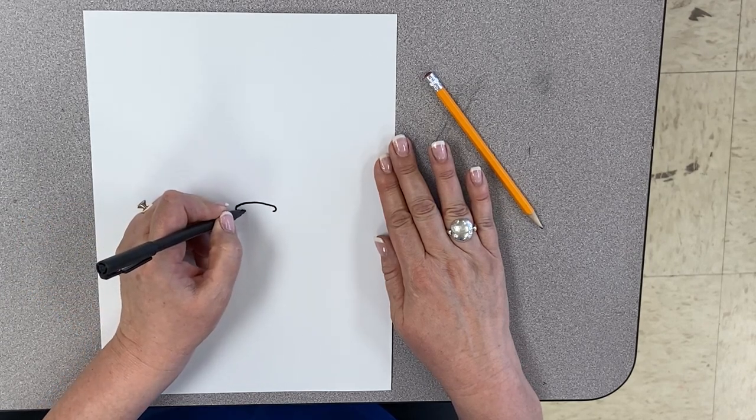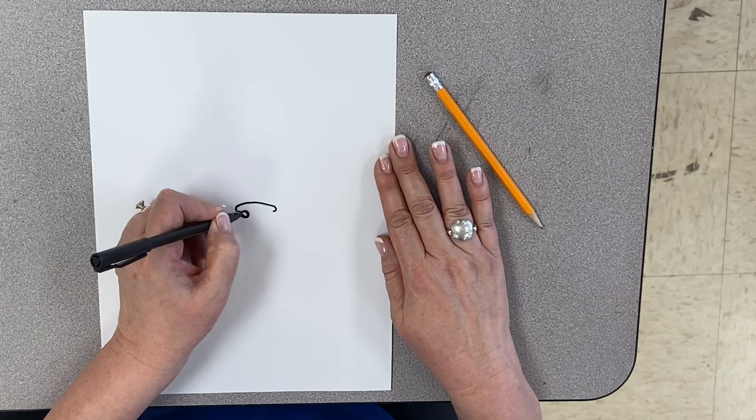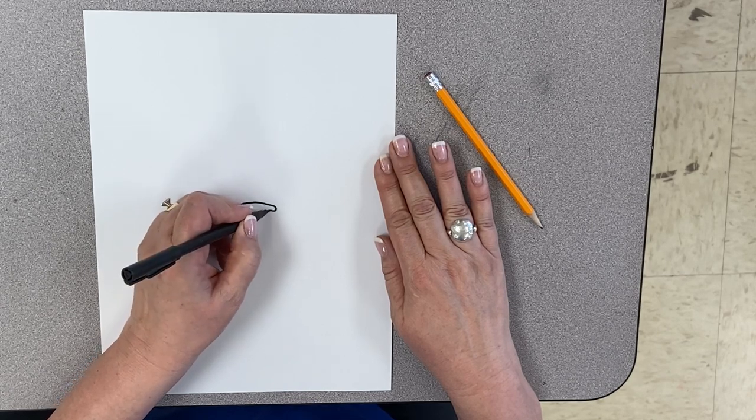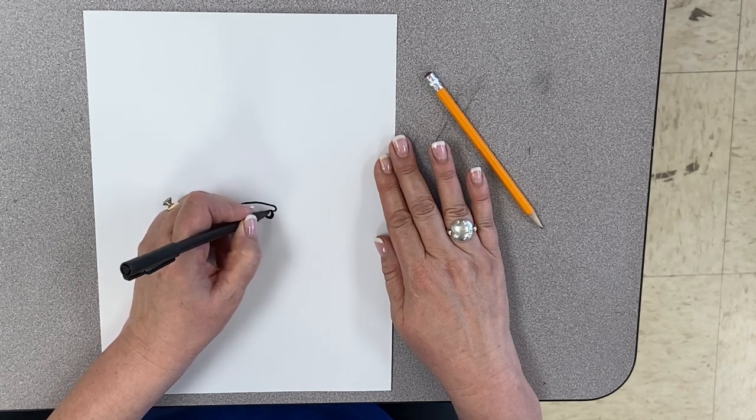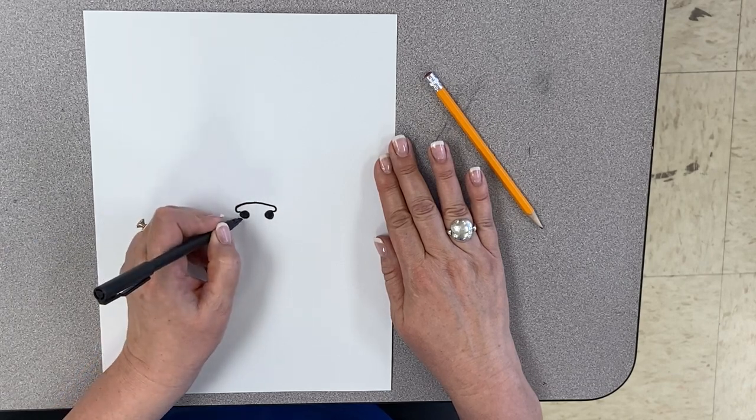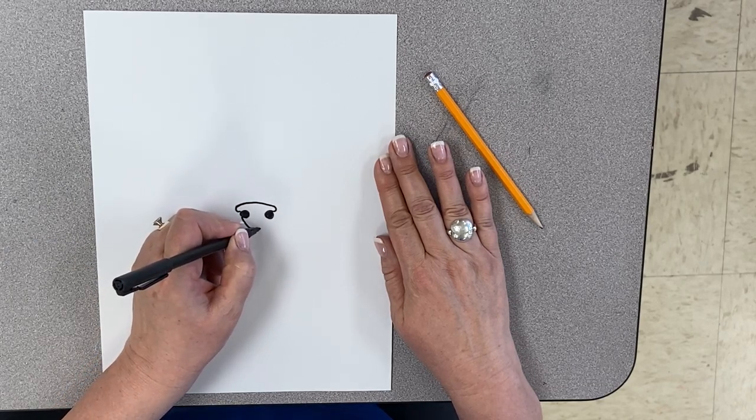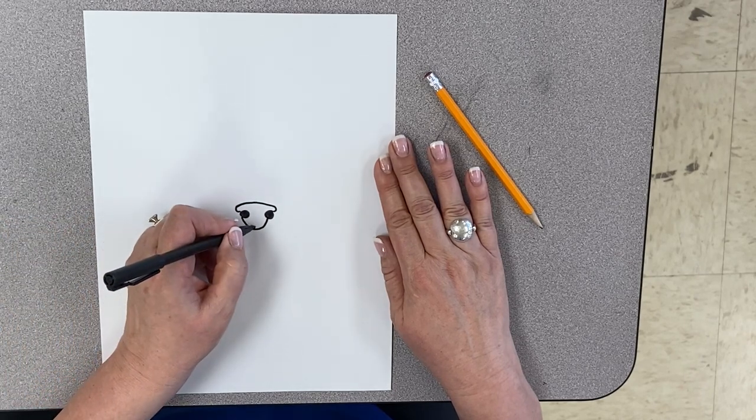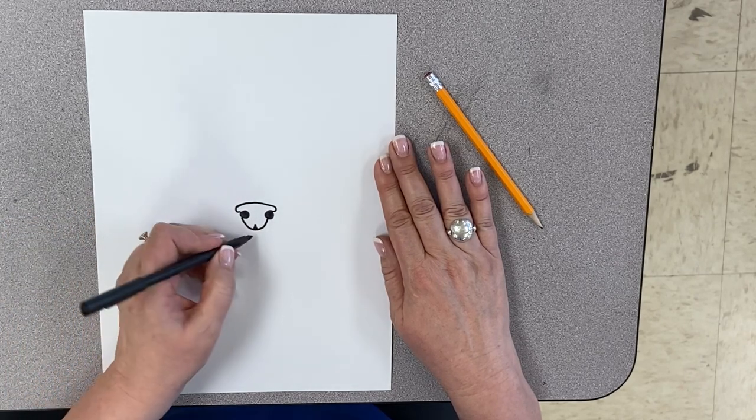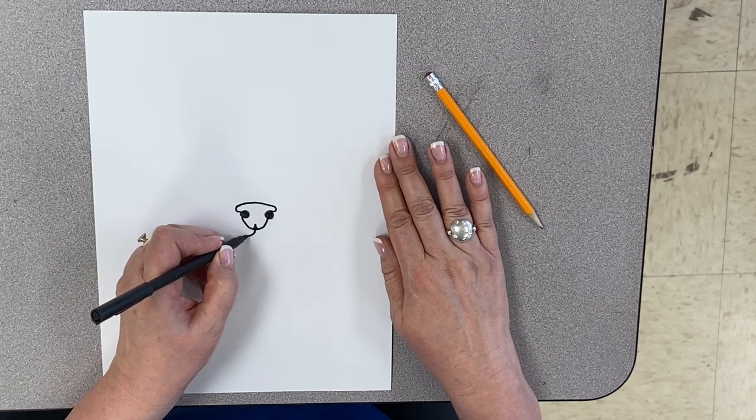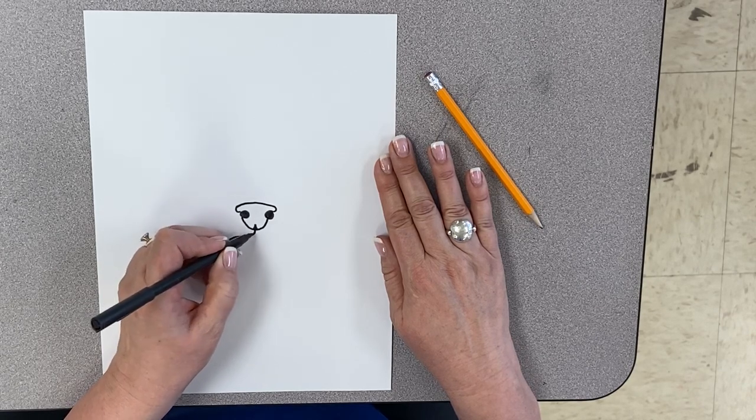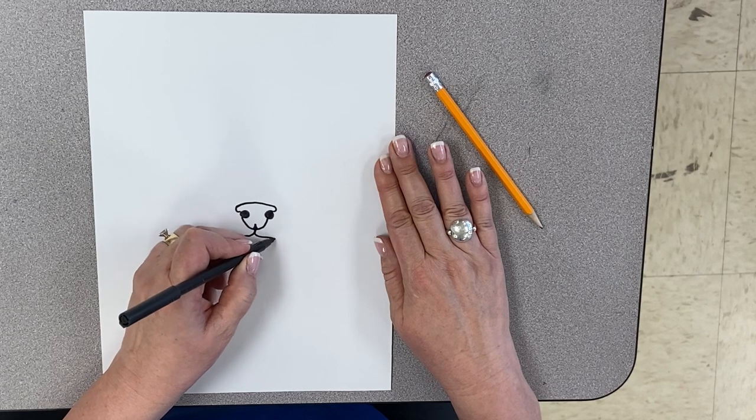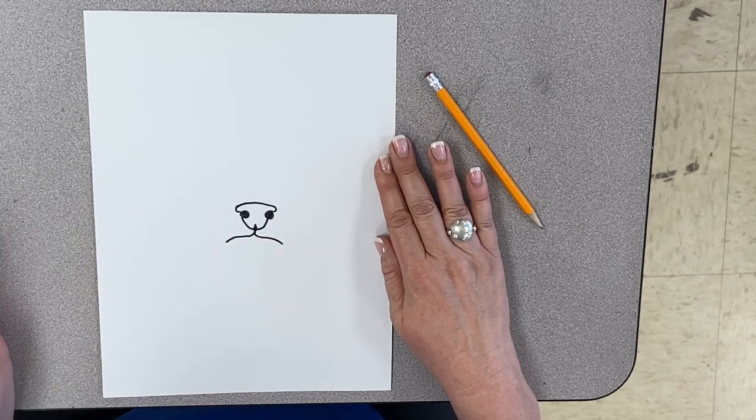And then we're going to hook that into some nostrils like that. And then it kind of comes down and around like so, and it's got a little thing here and it comes down like that. There we go.